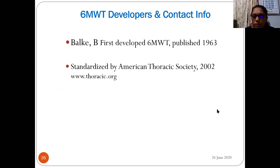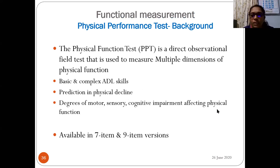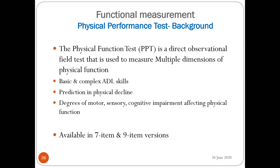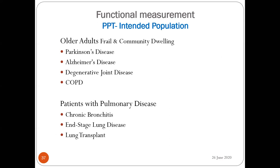The physical performance test (PPT) is a direct observational field test used to measure multiple dimensions of physical function, basic and complex ADLs, prediction of physical decline, and degrees of motor sensitivity. Cognitive impairment can also affect physical function scores. It is available in a seven-item or nine-item version. Intended populations include older adults, community-dwelling individuals, Parkinson's disease, Alzheimer's disease, degenerative joint disease, COPD, chronic bronchitis, end-stage lung disease, and lung transplantation.